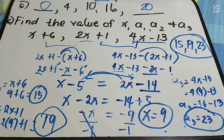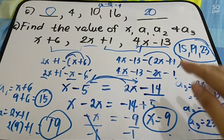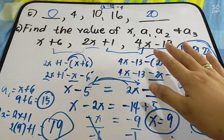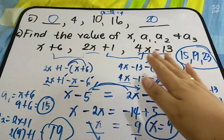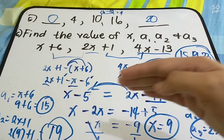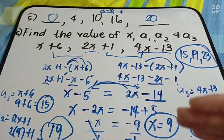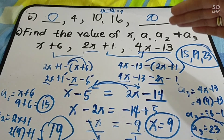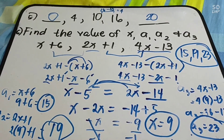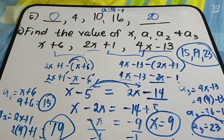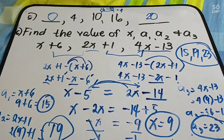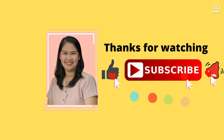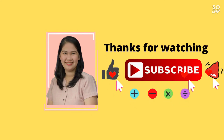Is it clear? That is how you work with a given value of x to find the first, second, and third terms. Find the common difference, equate the common differences, solve for x, then substitute into your given sequence. Hope you understand this lesson. Please like this video. Thank you for listening.